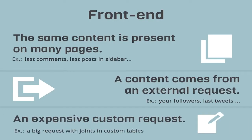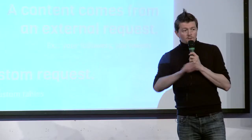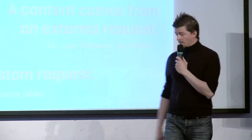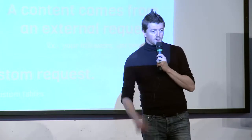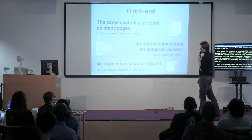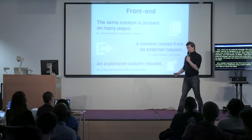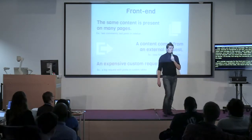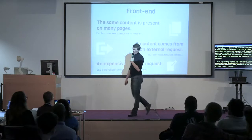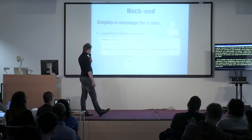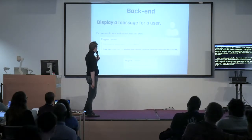And some examples for the frontend: if you do custom requests in your database using custom tables with big joins, you may need to cache the data - the results of the request - because you don't want to go to the database each time, for each page, for each visitor.